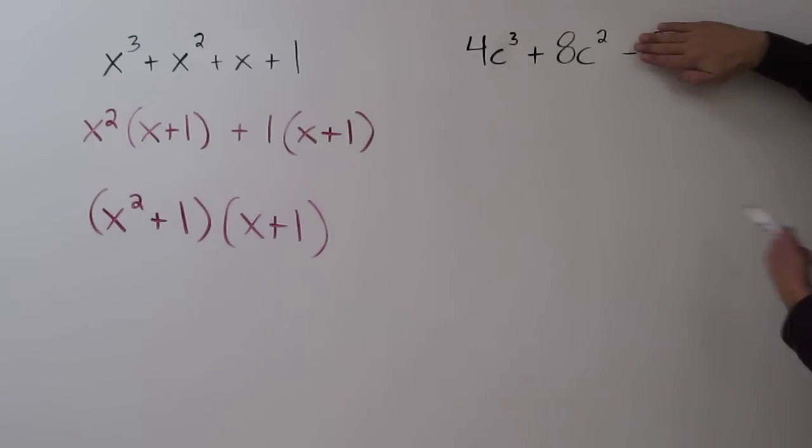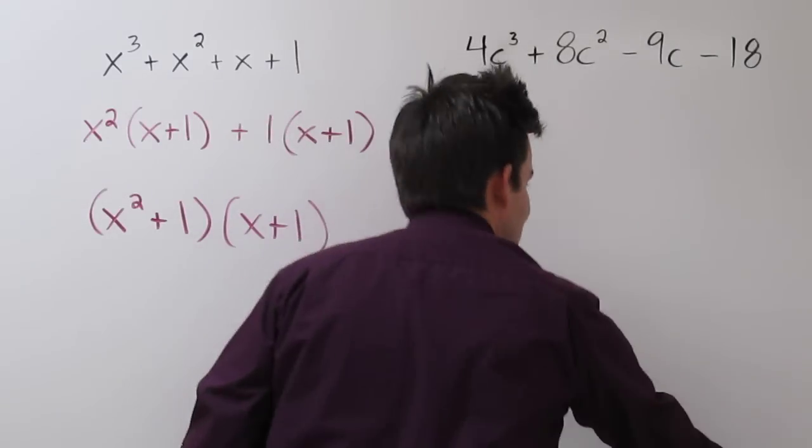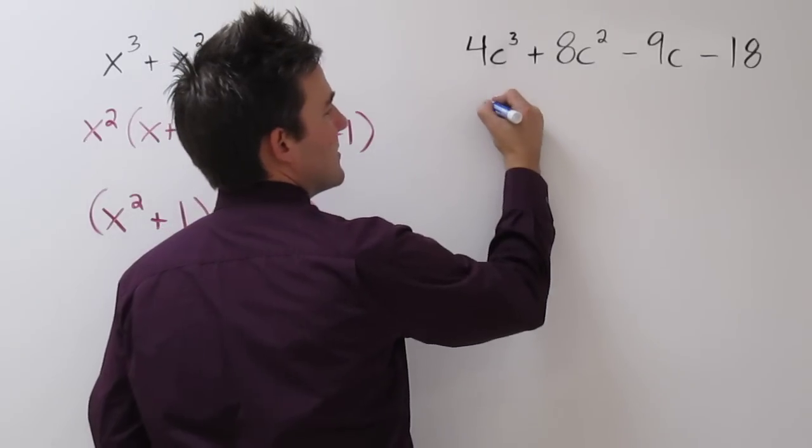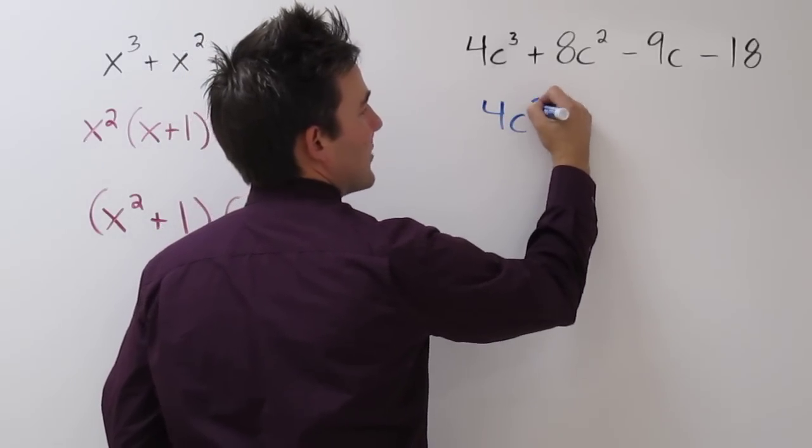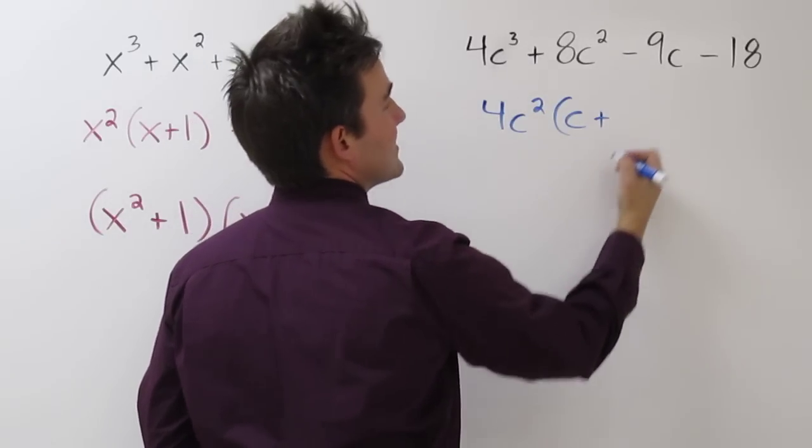Well, those share a common factor of 4c squared. So if I factor out a 4c squared, I get 4c squared, I'd be left with c plus 2.